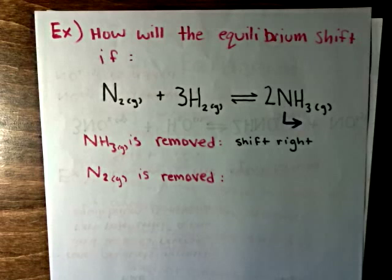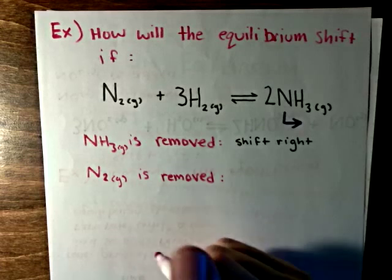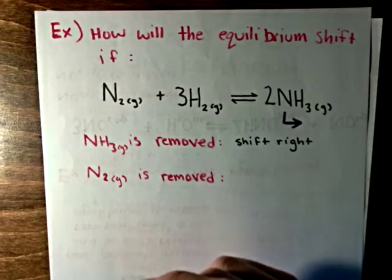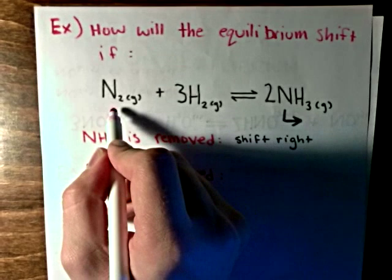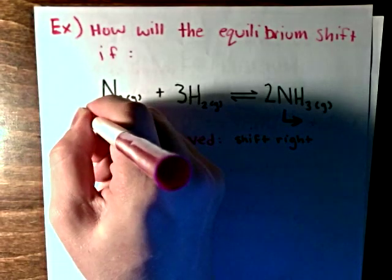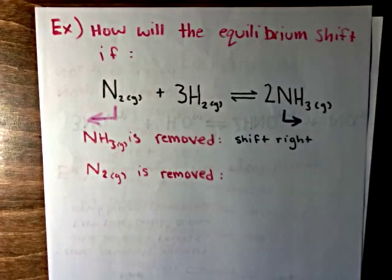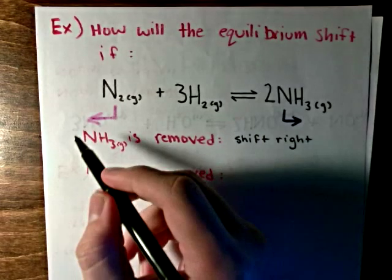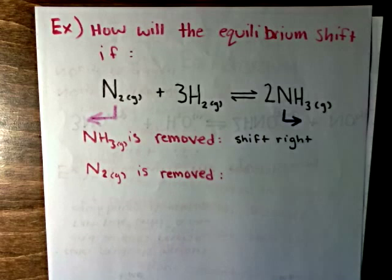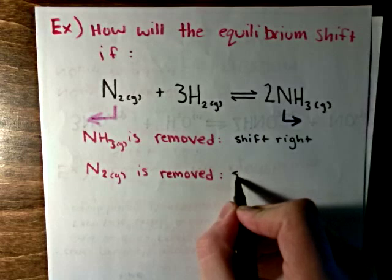Now, the second part asks what would happen if nitrogen gas was removed. So, we're removing a reactant. And you can do the exact same thing. Draw an arrow in this direction to signify that nitrogen gas is being removed. And this arrow is pointing left. So, we can say that the equilibrium will shift left.